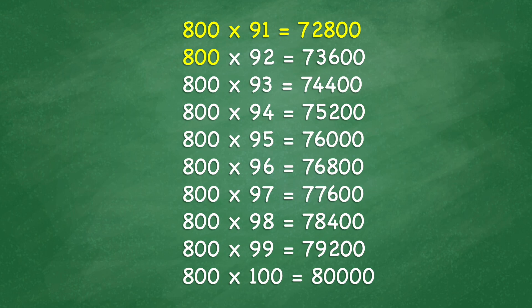800 times 92 equals 73,600. 800 times 93 equals 74,400. 800 times 94 equals 75,200. 800 times 95 equals 76,000. 800 times 96 equals 76,800.